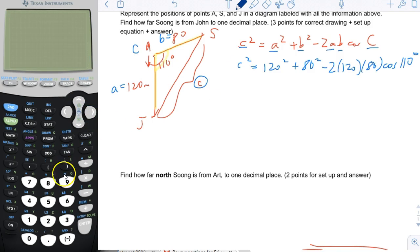120 squared plus 80 squared minus 2 times 120 times 80 times cosine of 110. And I get that huge number. And it turns out c squared equals this huge number.